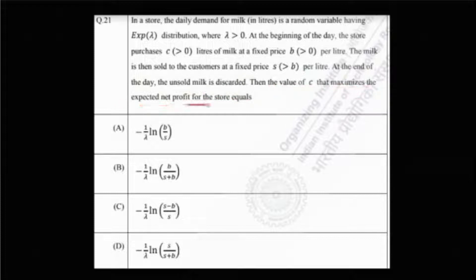At the beginning of the day, the store purchases C liters of milk at a fixed price B per liter. The milk is then sold to customers at a fixed price S, which is greater than B per liter. At the end of the day, the unsold milk is discarded.